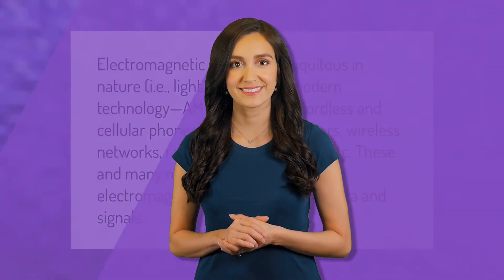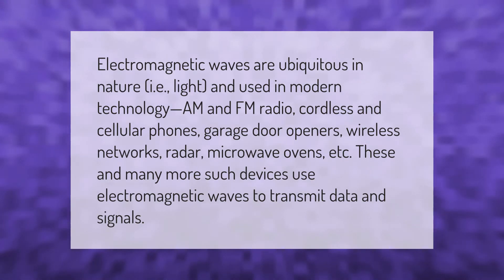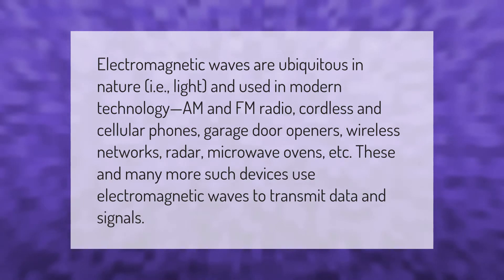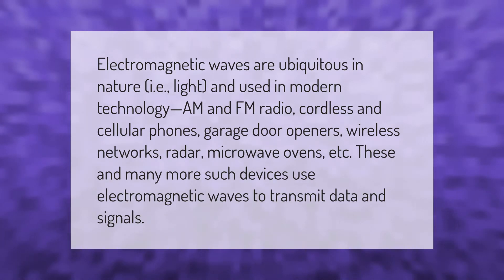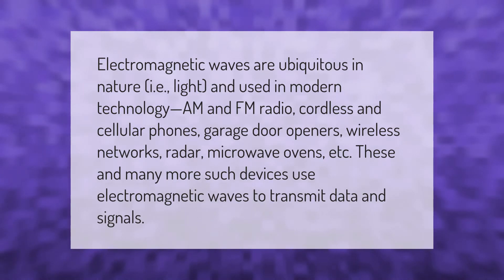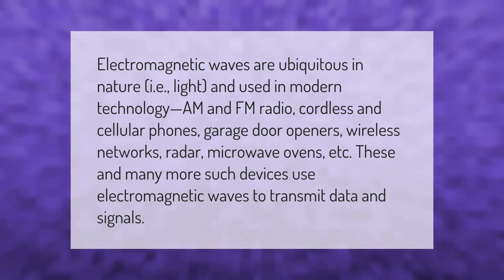Electromagnetic waves are ubiquitous in nature, such as light, and are used in modern technology: AM and FM radio, cordless and cellular phones, garage door openers, wireless networks, radar, microwave ovens, etc. These and many more devices use electromagnetic waves to transmit data and signals.